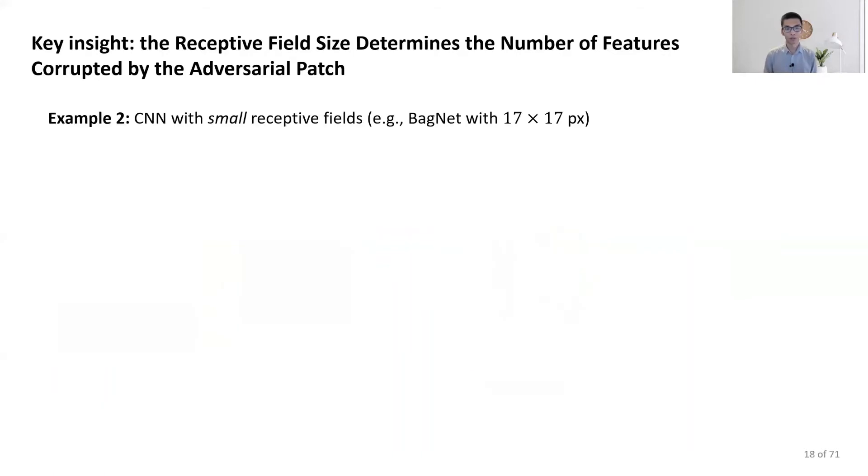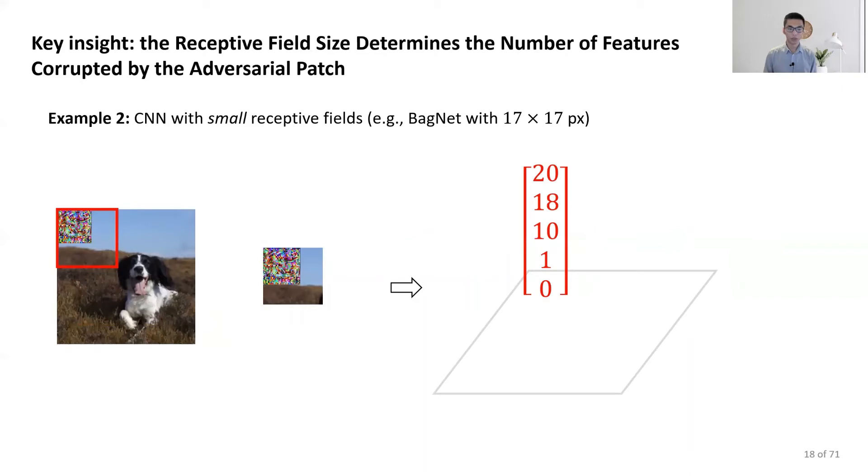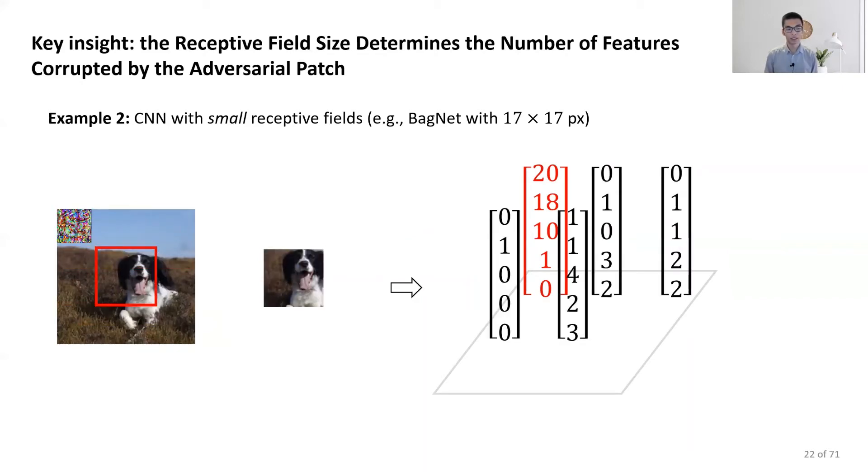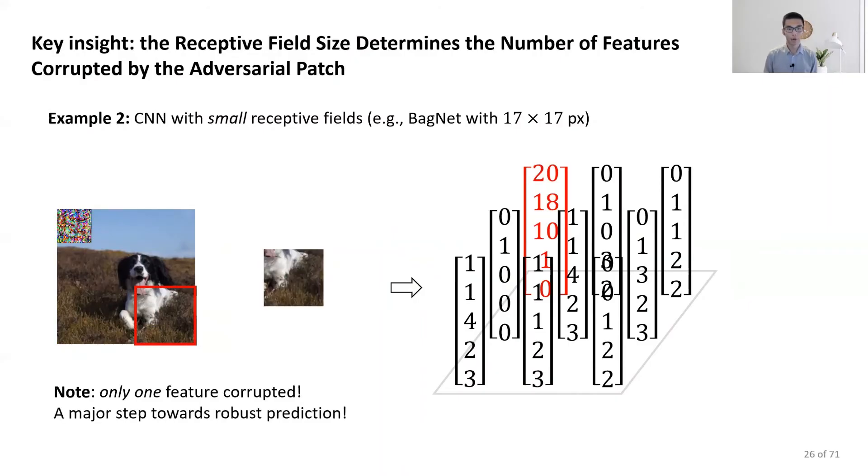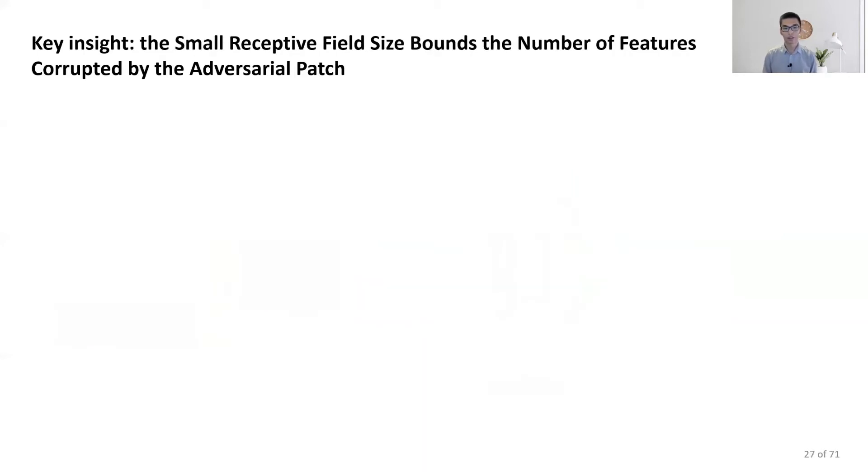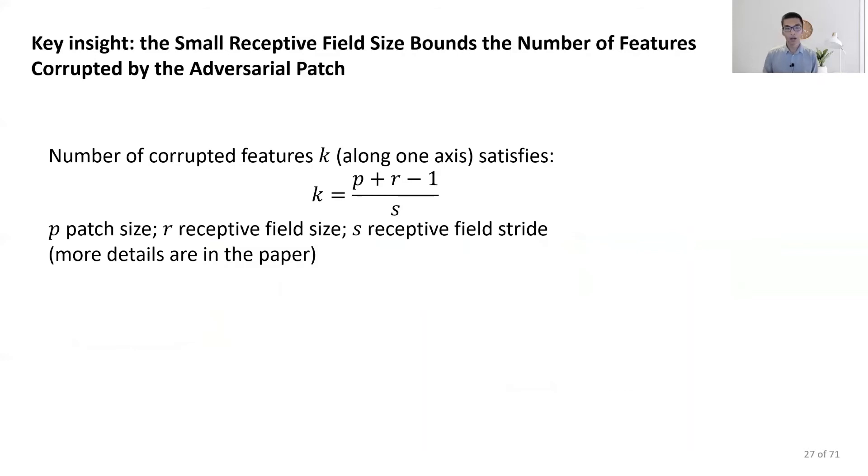On the other hand, if we use a small receptive view, although the first feature is corrupted, the remaining ones do not see the perturbations at all, and they are intact. Here, only one feature is corrupted and we made a major step towards robust prediction. In fact, we can show that the number of corrupted features is determined by the patch size, receptive view size, and receptive view stride. A smaller receptive view gives fewer corrupted features.